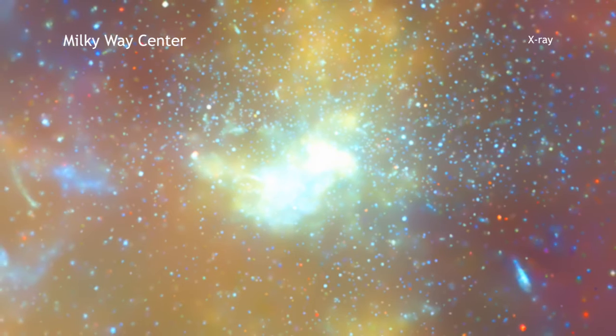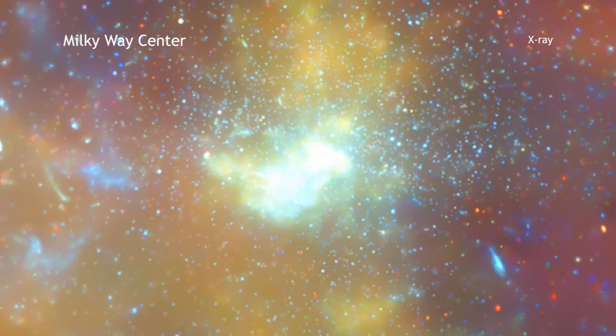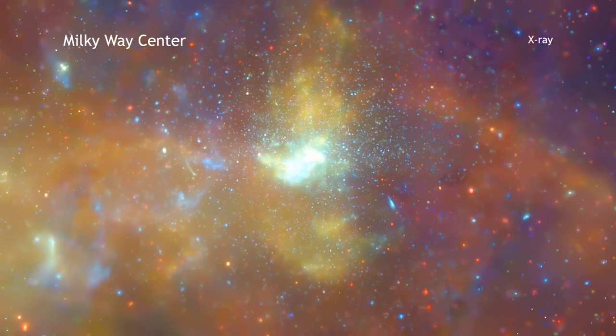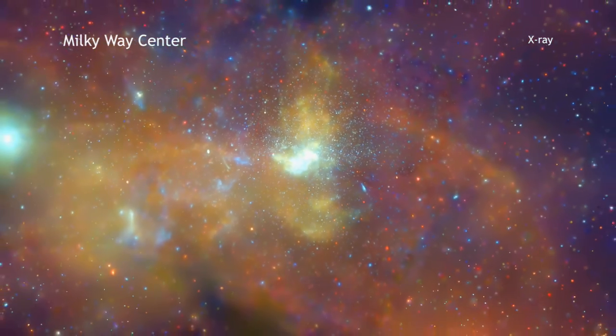The diffuse X-ray light comes from gas heated to millions of degrees by outflows from a supermassive black hole, winds from giant stars, and stellar explosions.